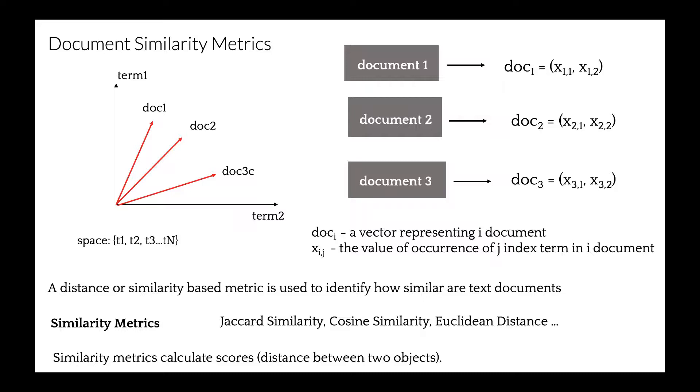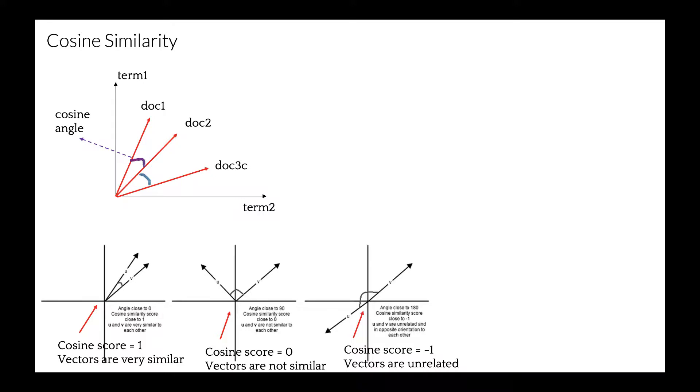There are a few text similarity metrics, such as Jaccard similarity, cosine, and Euclidean distance. This metric calculates score between documents or sentences, and score here means a distance between two objects. Let's look at cosine similarity.